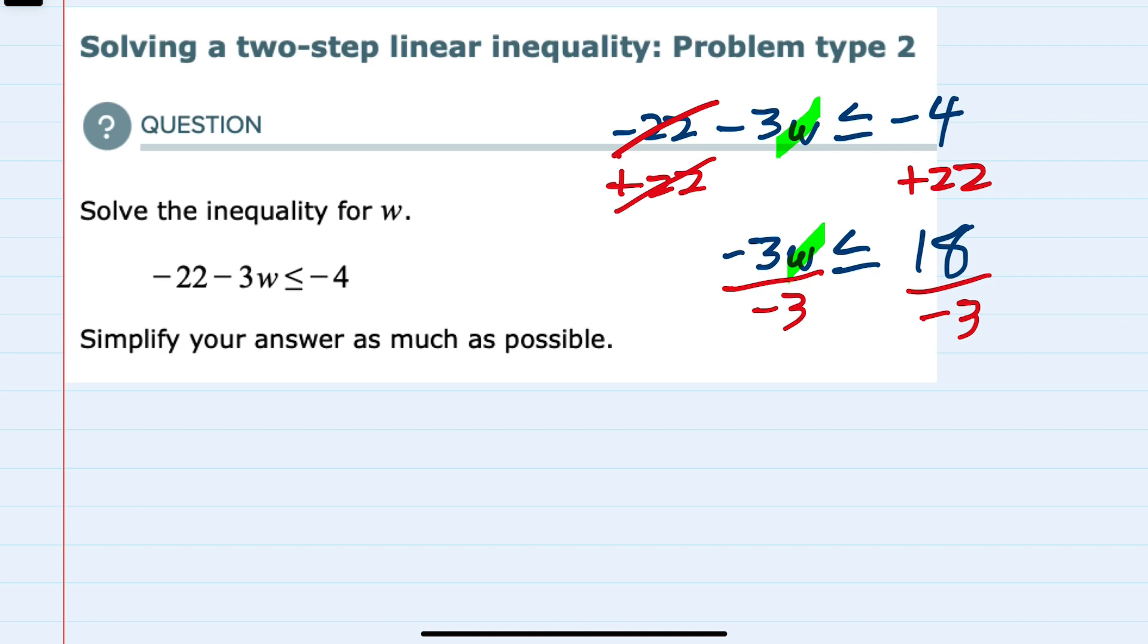On the left-hand side the minus 3s cancel, leaving me with just W, and on the right-hand side, 18 divided by negative 3 is negative 6.